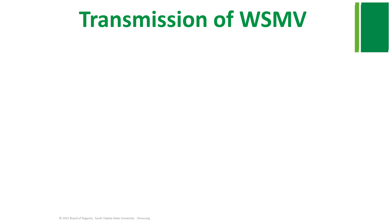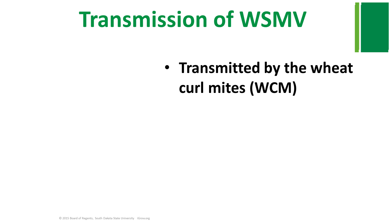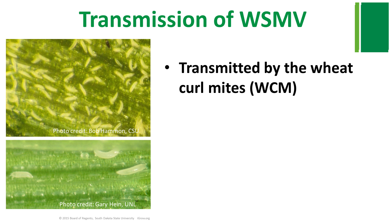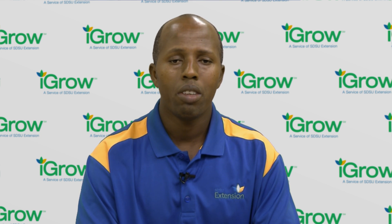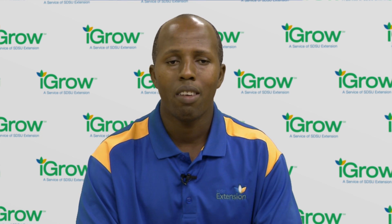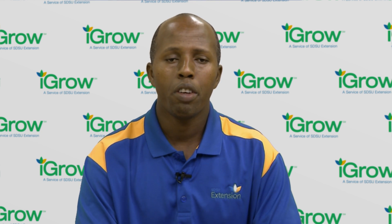Wheat streak mosaic virus is transmitted through the vector, the wheat curl mites. Wheat curl mites are microscopic, less than 0.3 mm long, and can only be seen under magnification, such as a 20x hand lens or higher. When temperatures and natural enemies are not limiting, mites develop from egg to adult in 8 to 10 days and can increase to a higher population density in a short period.